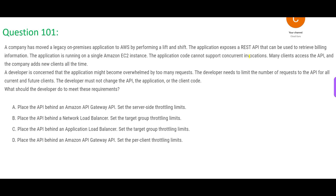In this question, consider there was a software developer engineer one year back when the market was absolutely fantastic. Now the market is screwed up, so this developer has no value. Imagine one year back he was getting offer letters from Accenture, TCS, Infosys, and so many other companies, but he was not able to keep up with the requests. It's the same problem — the problem is with the API. The API cannot support concurrent invocations, but a lot of people are calling those APIs because the number of clients keeps increasing. What should we do?